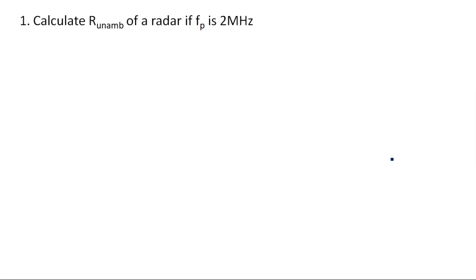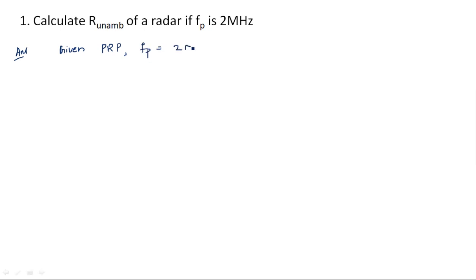Now let us move on to the problems. Let us consider a small problem: calculate the maximum unambiguous range of the radar if the pulse repetition frequency is given as 2 megahertz. So the pulse repetition frequency is given as 2 megahertz. Let us solve this one.